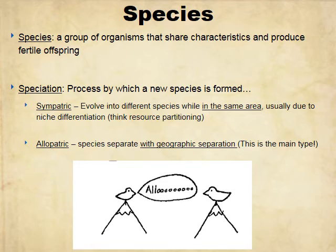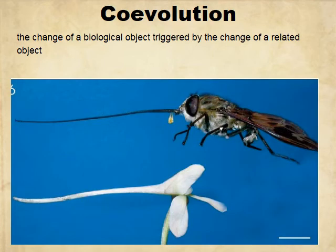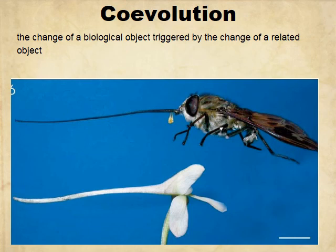Allopatric speciation is the main type, exemplified by Darwin's finches, which were separated by geographic barriers on different islands. Co-evolution is where the change in one organism triggers a change in a related organism. For example, a moth adapted to feed only on one specific orchid — if that orchid goes extinct, the moth goes extinct too, and if the moth goes extinct, the orchid won't be pollinated and will also disappear. That's part one.